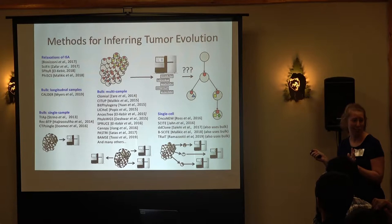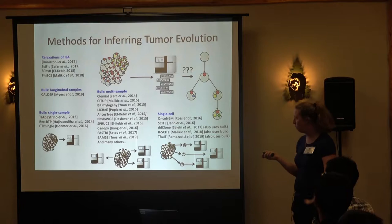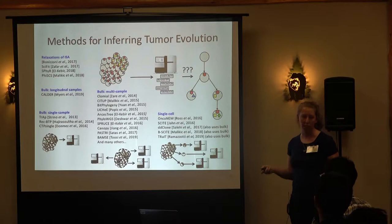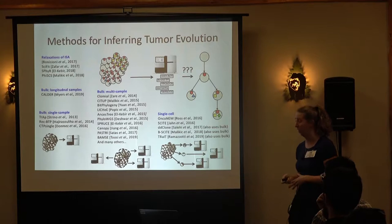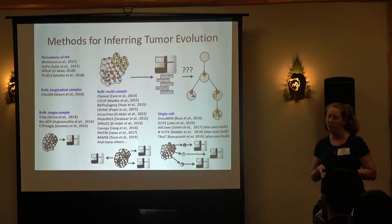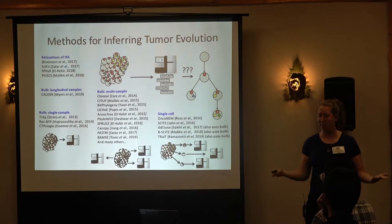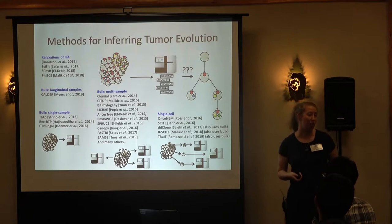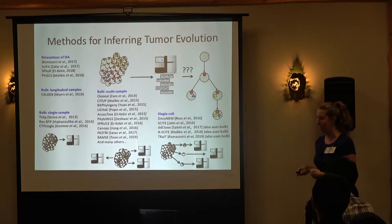A lot of people have been working on this field in recent years. There are methods for single-sample bulk sequencing, multi-sample bulk sequencing, single cell, and people have started relaxing the infinite sites assumption and looking at longitudinal samples. The research in my lab has been focused on — rather than designing yet another inference method — how do we actually make the output of these methods more useful to get better inferences?